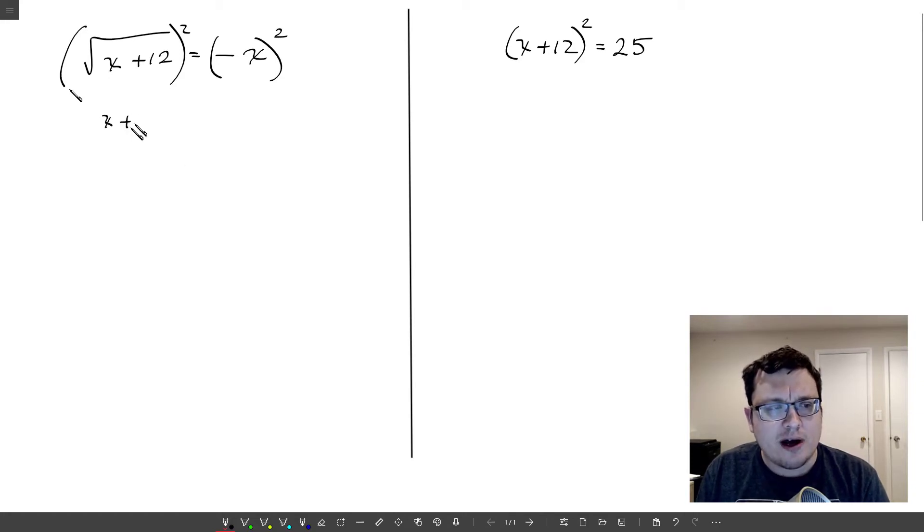We'll get x plus 12 equals x squared. Let's bring everything over to one side, move the x and the 12 over. x squared minus x minus 12 equals zero. Now we've got a quadratic, we know how to handle these. We factor: x minus four times x plus three. And so I get two solutions, four and negative three.